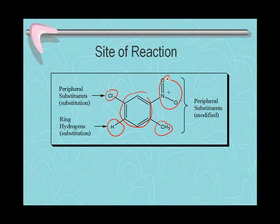All three of these — the chloro, methyl, and nitro — are referred to as peripheral substituents, and they can be modified or substituted, in the case of chlorine, using the chemistry in this mini-lecture.